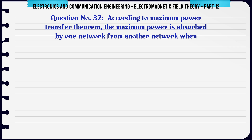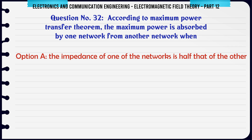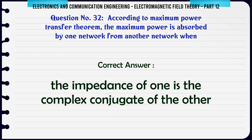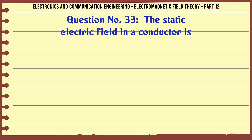According to the maximum power transfer theorem, the maximum power is absorbed by one network from another network when: A. The impedance of one is half that of the other, B. The impedance of one is the complex conjugate of the other, C. The impedance of one is equal to that of the other, D. None of the above. The correct answer is: the impedance of one is the complex conjugate of the other.